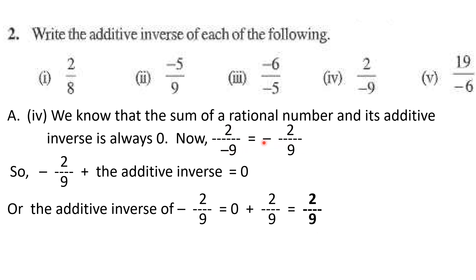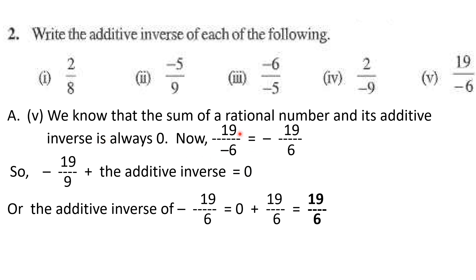Two upon minus nine is written in standard form as minus two upon nine. So minus two upon nine plus its additive inverse equals zero, giving the additive inverse as plus two upon nine. For the last part, nineteen upon minus six equals minus nineteen upon six. The additive inverse of minus nineteen upon six: minus nineteen upon six comes to the right side and becomes positive, so nineteen upon six is the additive inverse of minus nineteen upon six.